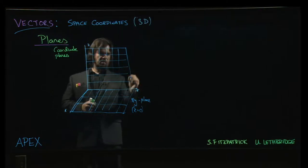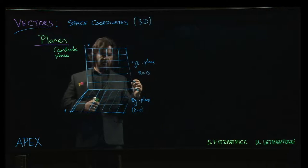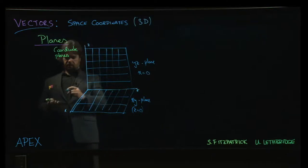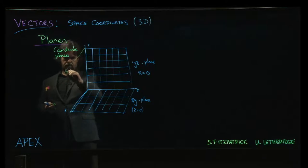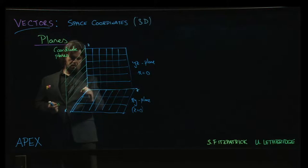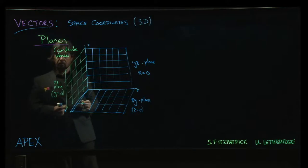So this is the yz plane, which is given by x equals zero. And finally there is the, maybe we'll do a different color just to sort of tell it apart. We have the xz plane, which is given by y equals zero.